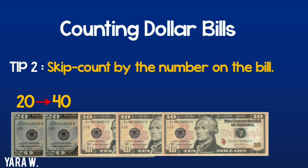Then I will start skipping by 10, it will be 50, then 60, and then 70. So the total amount here is $70.